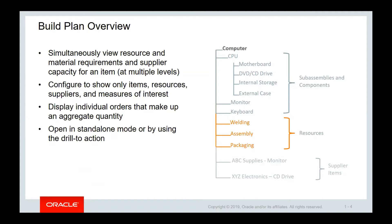With build plan, you can view material, resource requirements, and supplier capacity simultaneously in the context of demand or supply for an assembly on a time-bucketed basis. Use a build plan to configure the layout of analysis to show only the items, resources, suppliers, and measures that are of your interest, aggregated in time buckets such as weeks or months. You can opt to display the individual orders that make up the quantity in any supply, demand, or resource buckets.